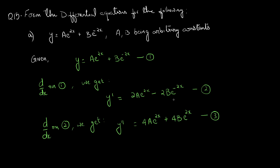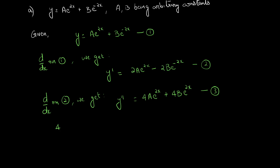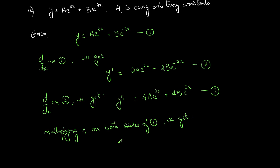Now we have three equations. We can easily eliminate a and b from this. Multiplying equation 1 by 4 on both sides, we get 4y equal to 4a e raised to 2x plus 4b e raised to minus 2x.